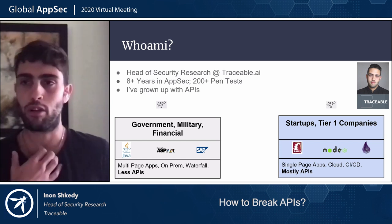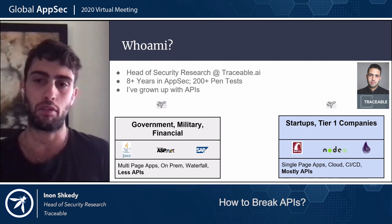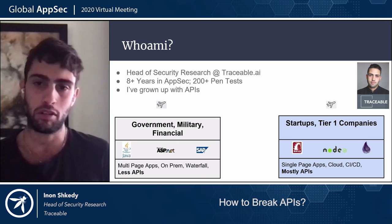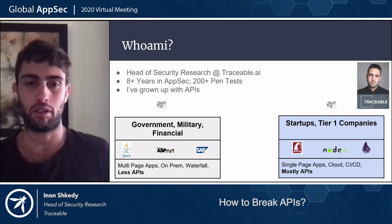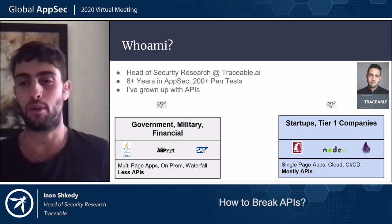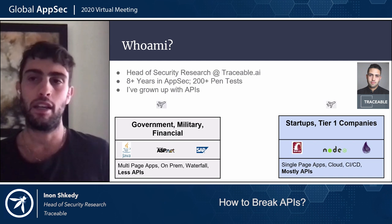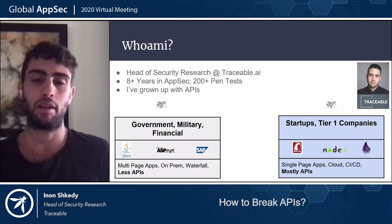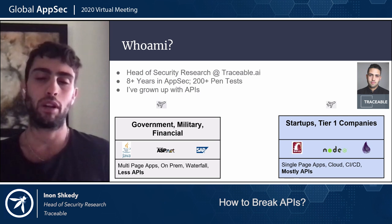After five years in the Israeli army, I decided to move to California, to Silicon Valley. For the last three years, I've been working mostly with startups and tier-one companies, and I got exposed to a new field of technologies. Instead of Java, ASP.NET, and all that traditional stuff, I started seeing more and more Ruby on Rails, Node.js, Python, and more. I also got exposed to new concepts like single-page applications, cloud environments, CI/CD. And most importantly, all these applications are heavily based on APIs — it's no longer just a niche component for B2B communication; today it's the backbone of the application.